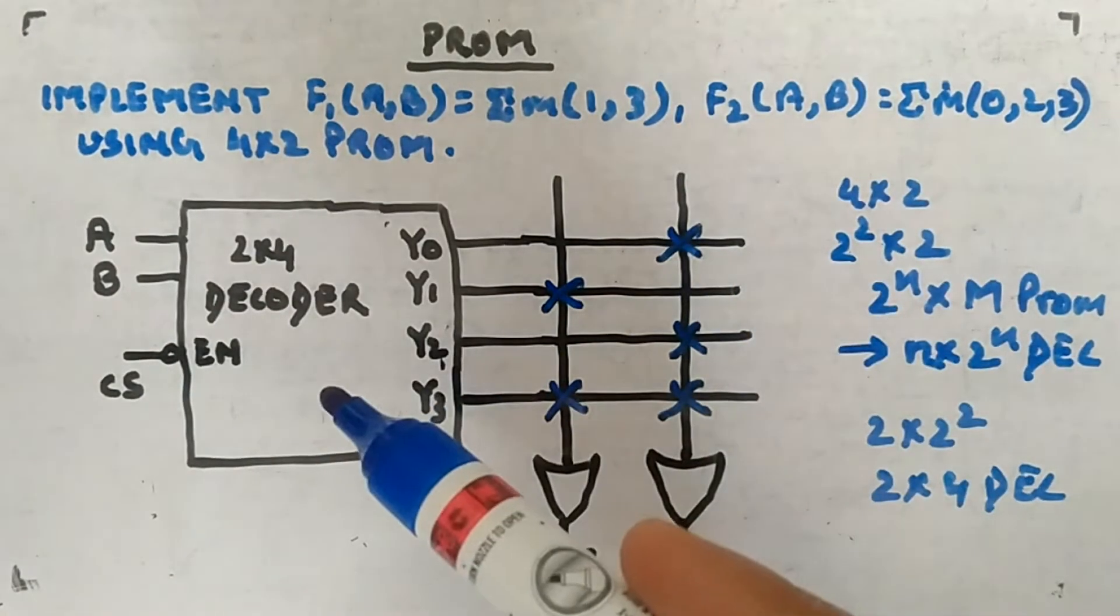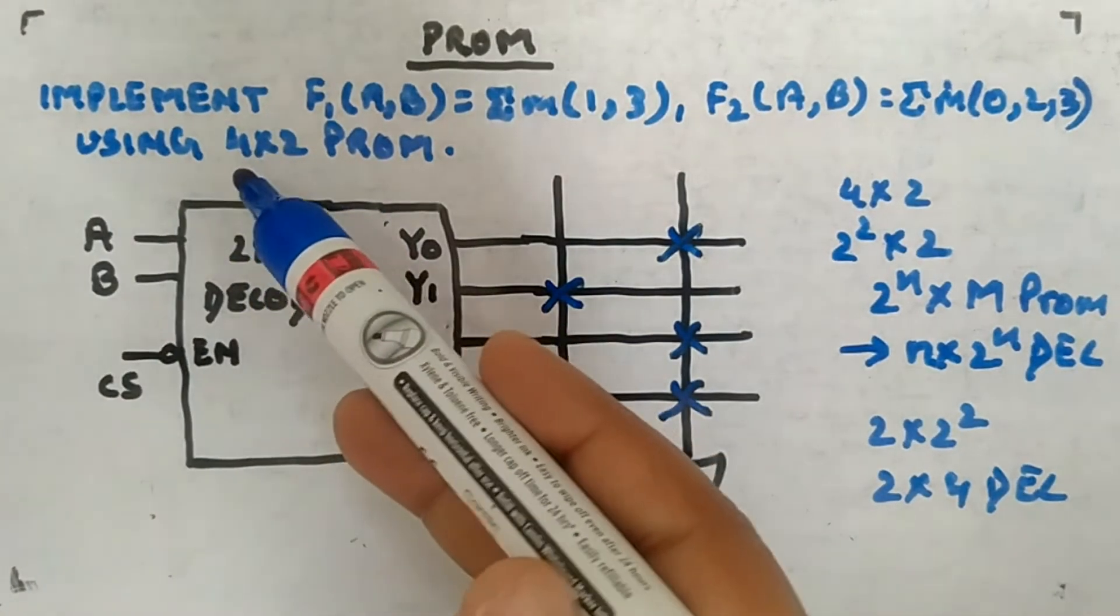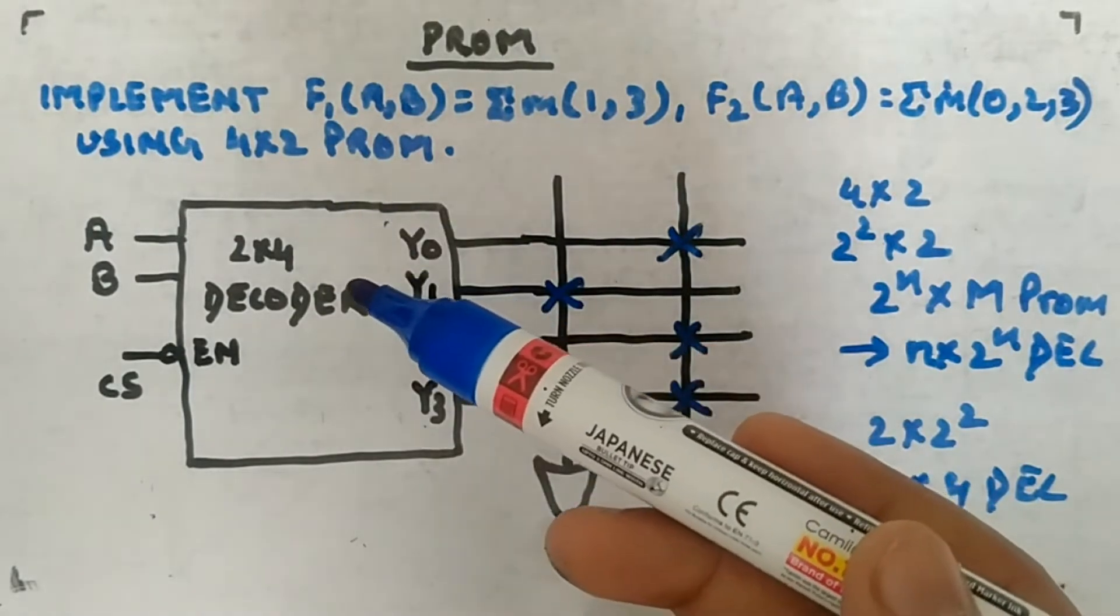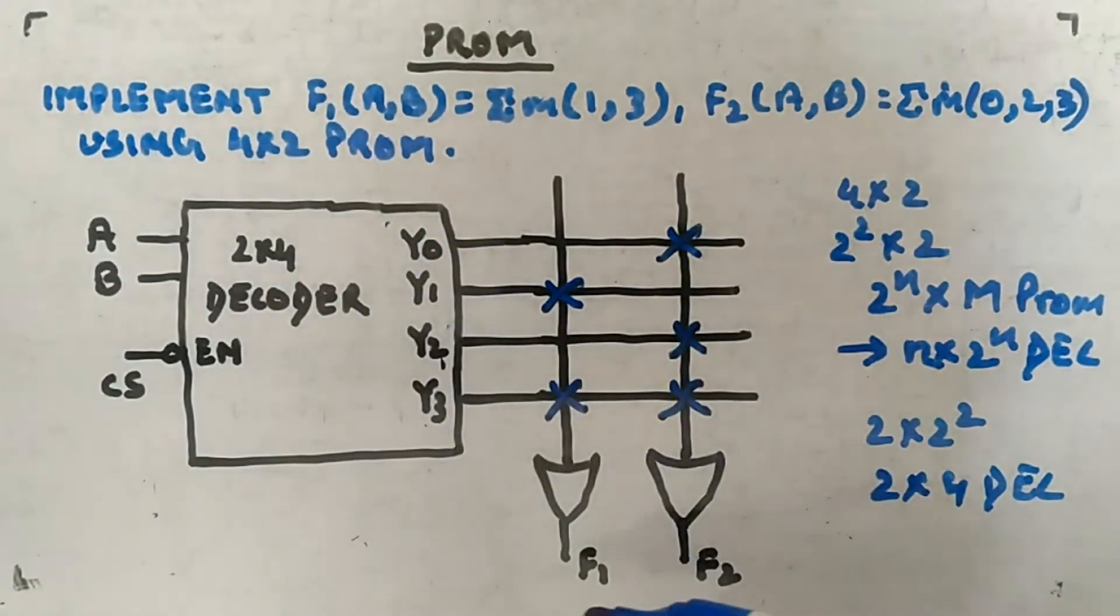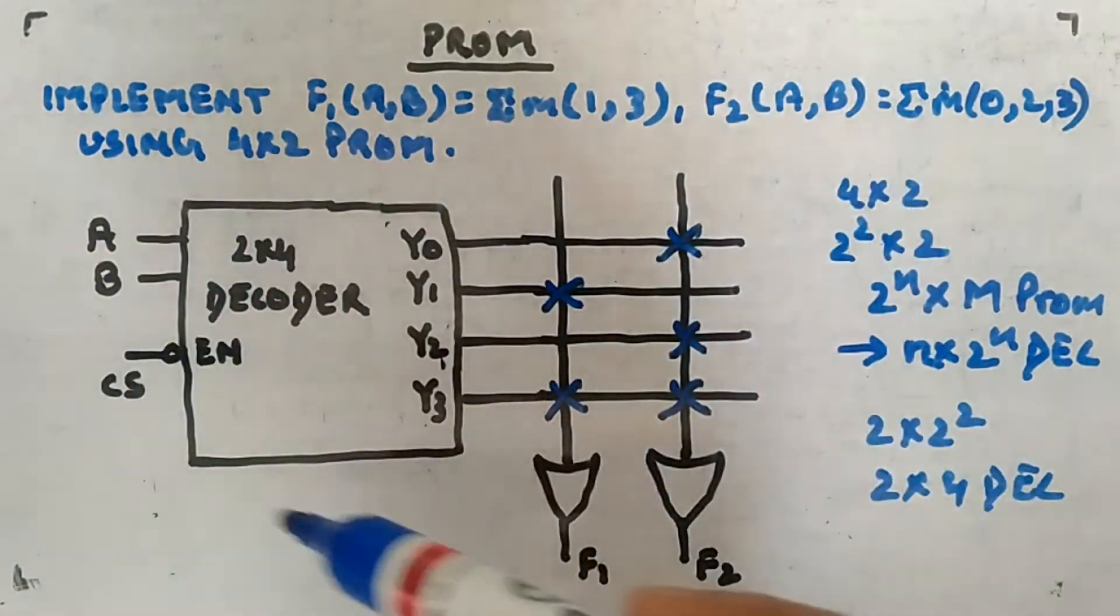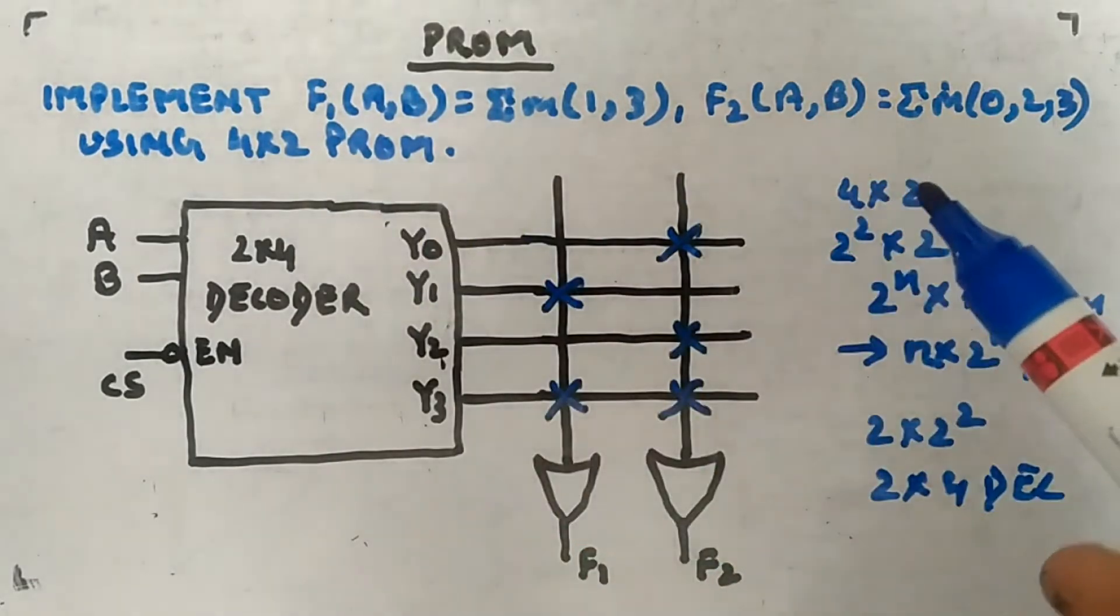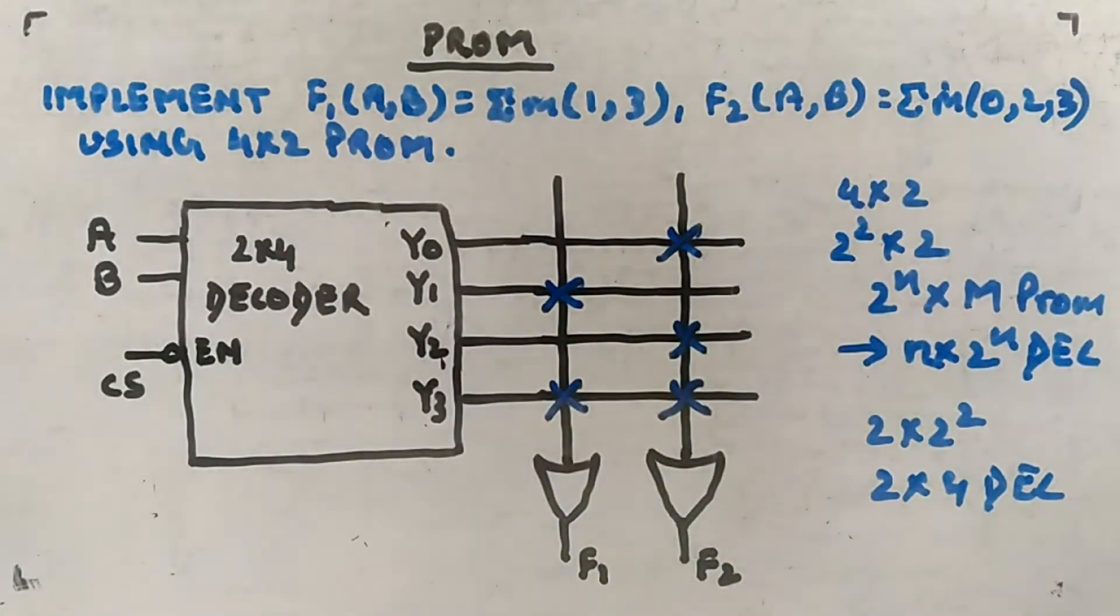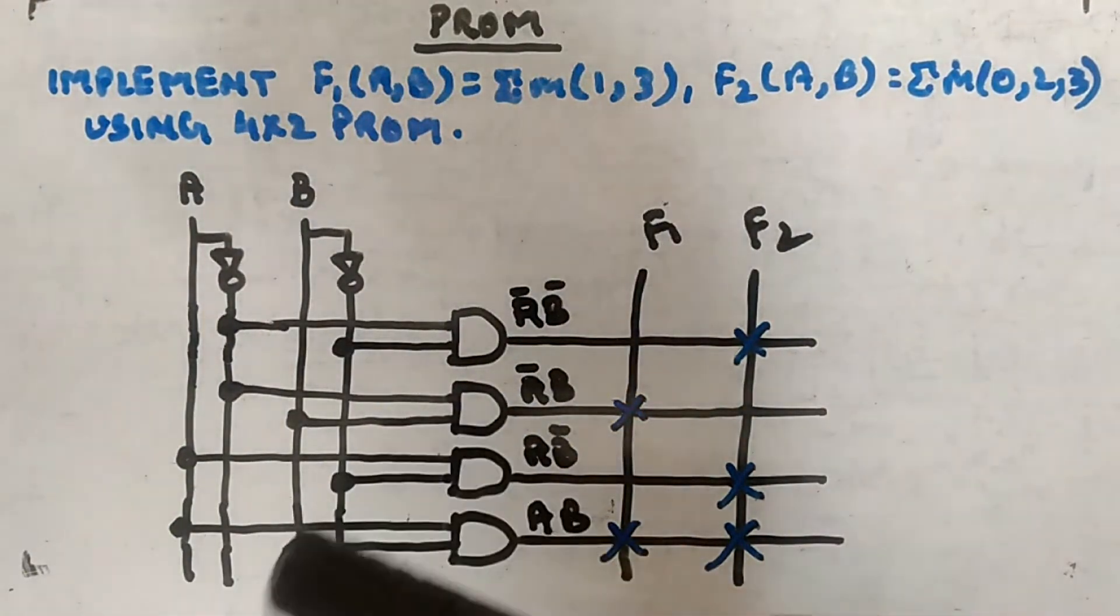This is how the realization of these two functions using 4×2 PROM will look like. It is telling you 4 means 4 minterms are there, or you can see two input variables are there and two outputs are there. So this whole thing is your 4×2 PROM which is implementing F1 and F2.